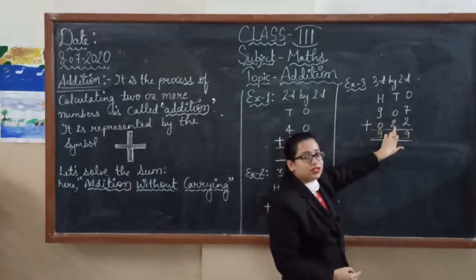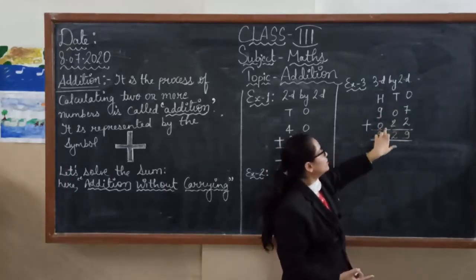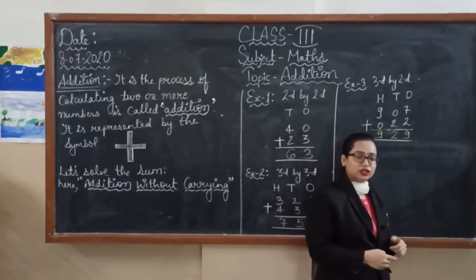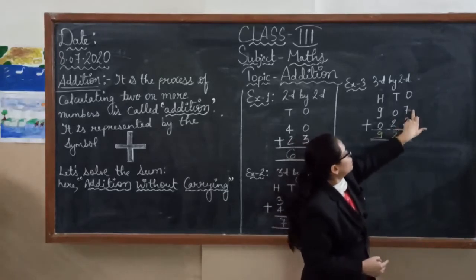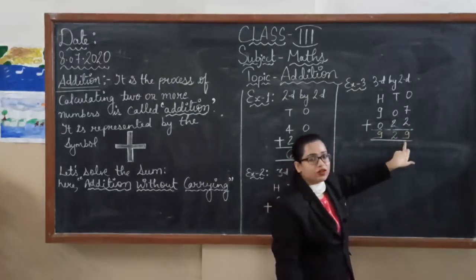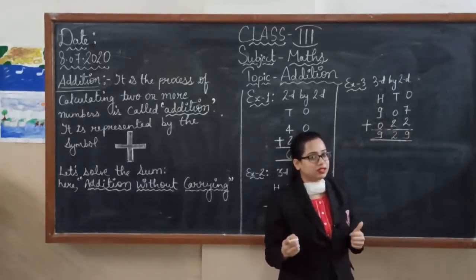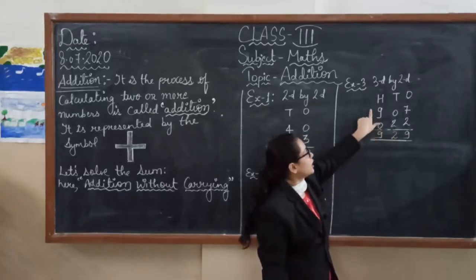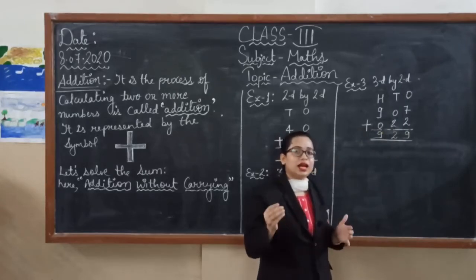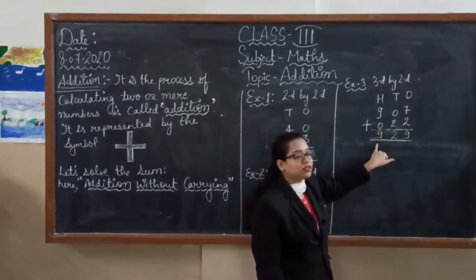We will start from the one's place. Two stands for one's place and this stands for ten's place. There is no number, so here we will put zero. Let's start addition. Always we will start addition from the one's place. Seven plus two equals nine. Zero plus two, when we add zero to any number, we will get the number itself. So here we will write two. And the last number is nine plus zero is nine. The final answer is nine hundred and twenty-nine.